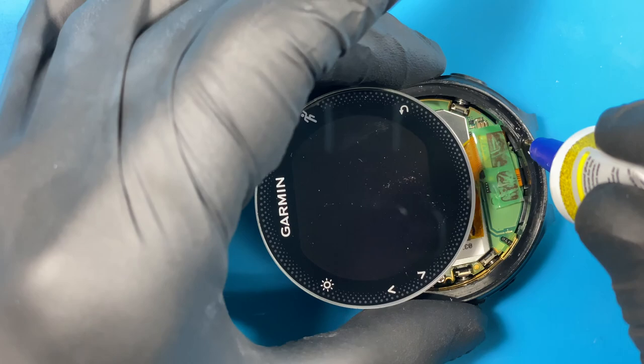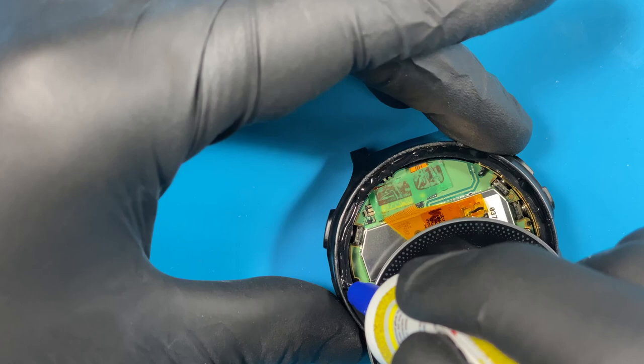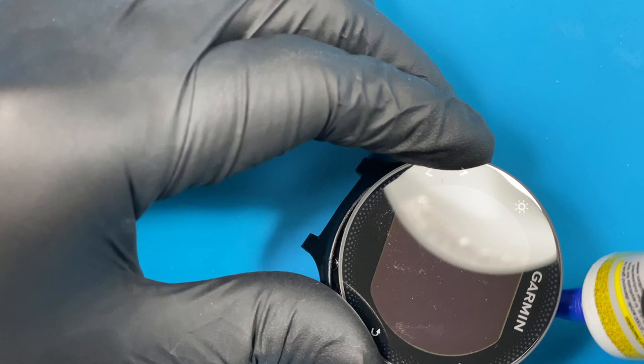This is why cleaning the frame is so important, because we're going to add adhesive to it. In this case, I'm using B7000 adhesive. You want to make sure the adhesive, the glass, and the frame all make contact properly, and when it's ready to cure, it's making a good seal. If you leave anything behind, it will not make a good seal and water will start to seep in.